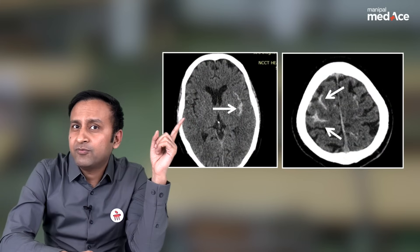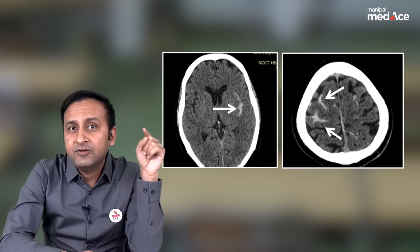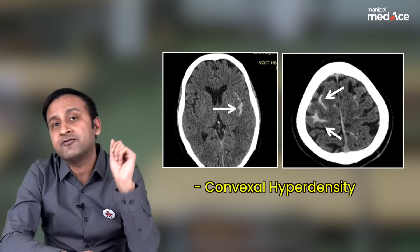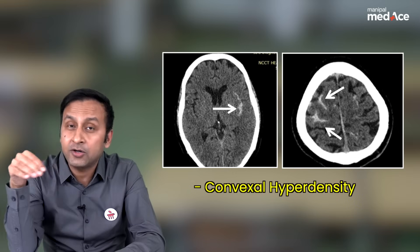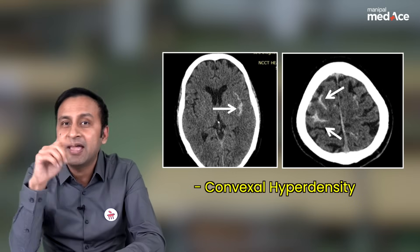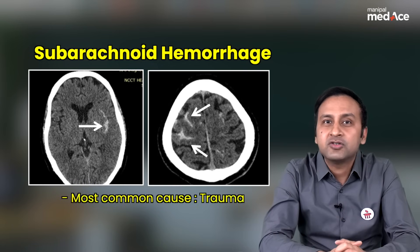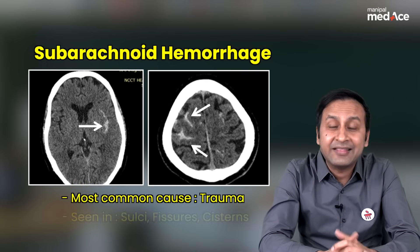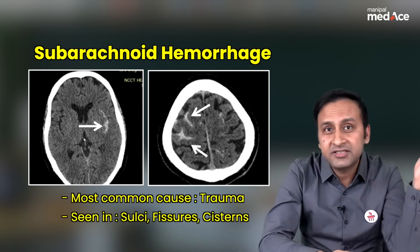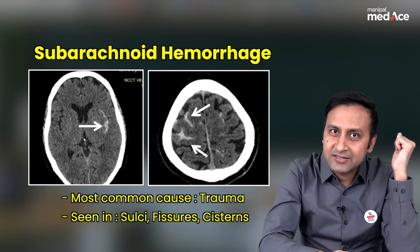Let's talk about the third type of bleed. This third type of bleed, in which you can see convex cell hyperdensity over the surface of the brain parenchyma insinuated or interdigitating between the gyri, is called a subarachnoid bleed. The most common cause of subarachnoid bleed is trauma, and the typical locations are over the fissures, sulcal spaces, and cisternal spaces.